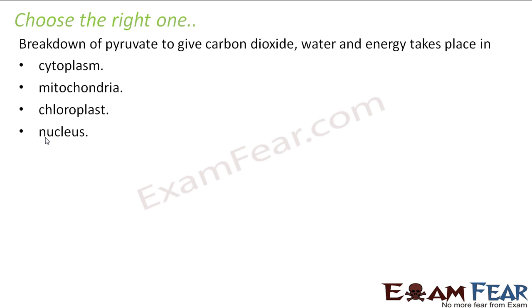Breakdown of pyruvate to carbon dioxide, water and energy takes place in the cytoplasm, mitochondria, chloroplast or nucleus? Remember the step-wise process of respiration. In both aerobic and anaerobic respiration, the first step is conversion of glucose into pyruvate, which happens in the cytoplasm. Once pyruvate is formed, it enters the mitochondria, loses one carbon dioxide, and forms acetyl coenzyme A. That acetyl coenzyme A then undergoes aerobic respiration to give carbon dioxide, water and energy — so this process takes place in the mitochondria. The second option is the correct answer.